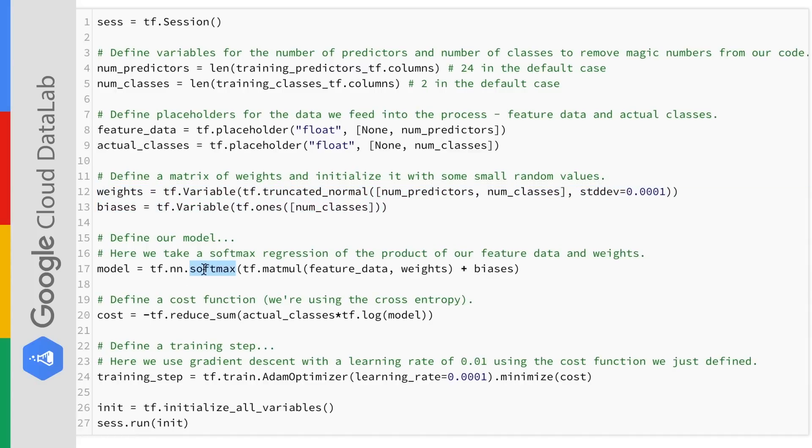Now we're ready to define our model. We define our model in a single line of code. We take the matrix multiplication of our feature data and our weights, we add our biases, and then we take the softmax regression which assigns a probability to each of these possible outputs. The output with the greatest probability is the one that we choose.